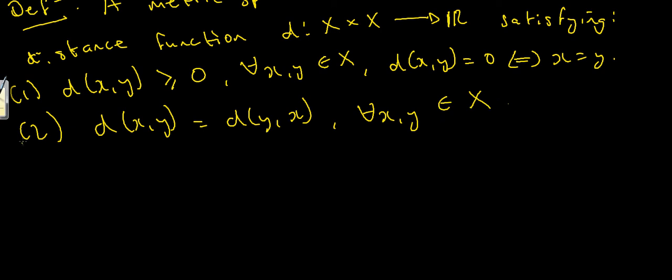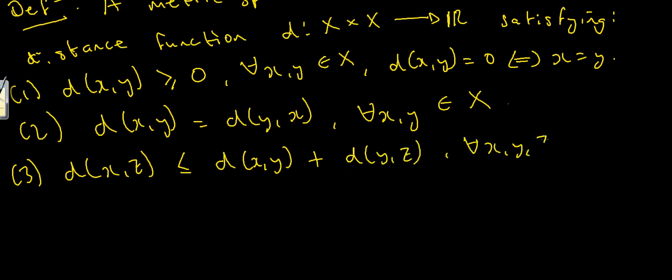There's one final property I'd like to talk about and that's the triangle inequality. So this says that the distance from x to z where z is another point in x is less than or equal to the distance from x to y plus the distance from y to z for all x, y and z in x. Now what does this mean exactly?